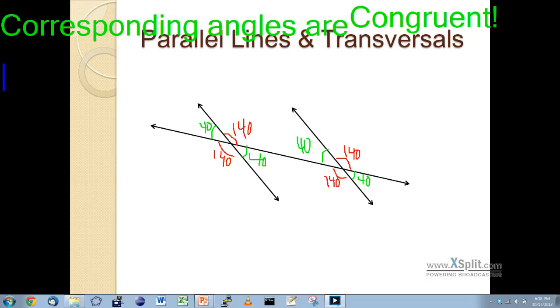If we look at alternate interiors, alternate interiors would be like the 140 and the 140, which are equal to each other. Or the 40 and the 40, which are also equal to each other. It looks like those are also congruent.